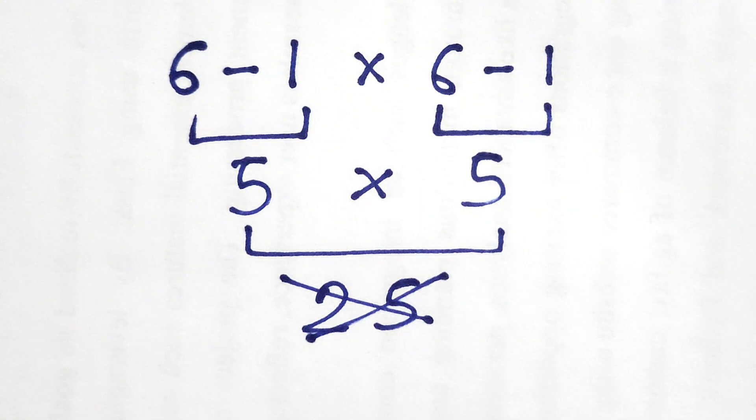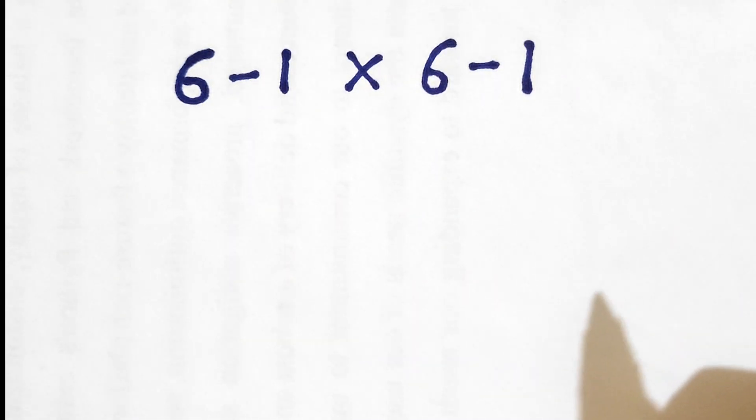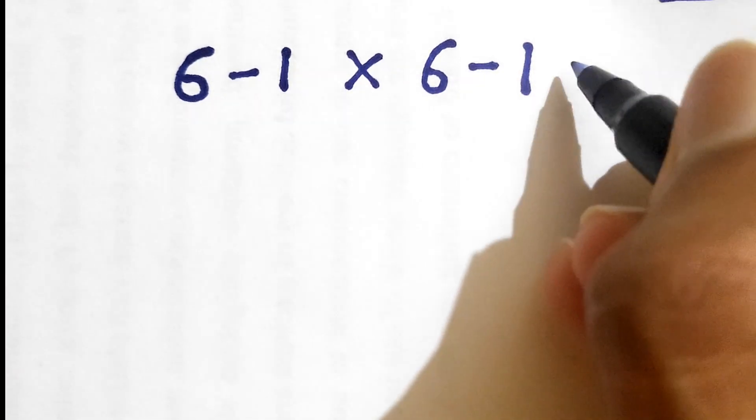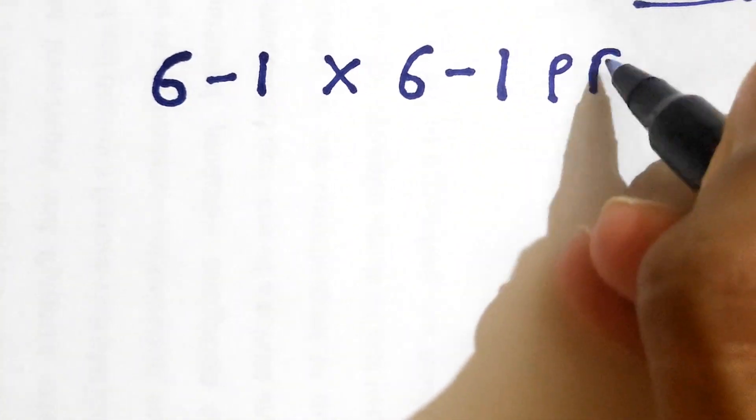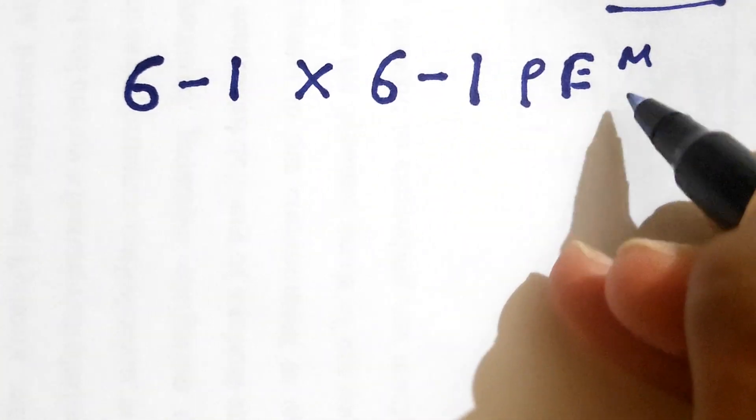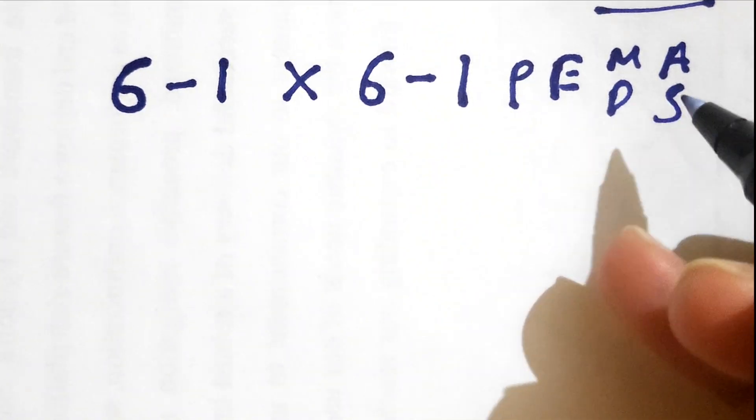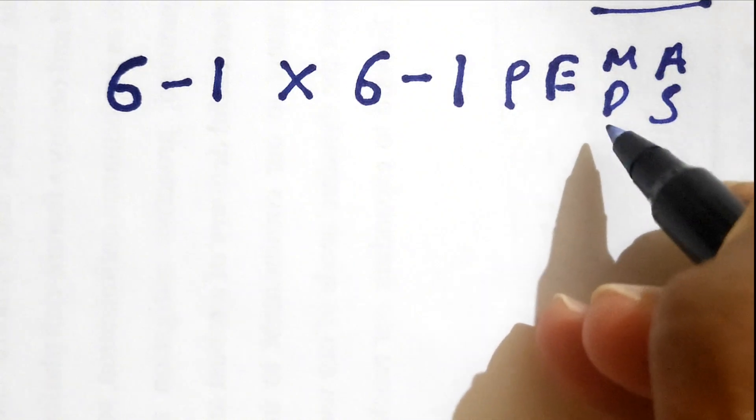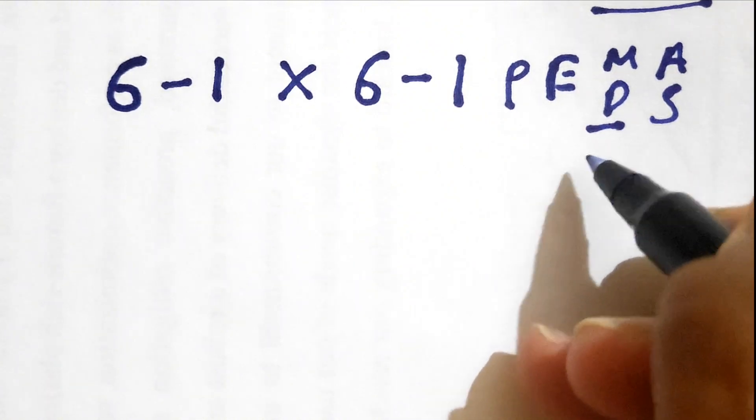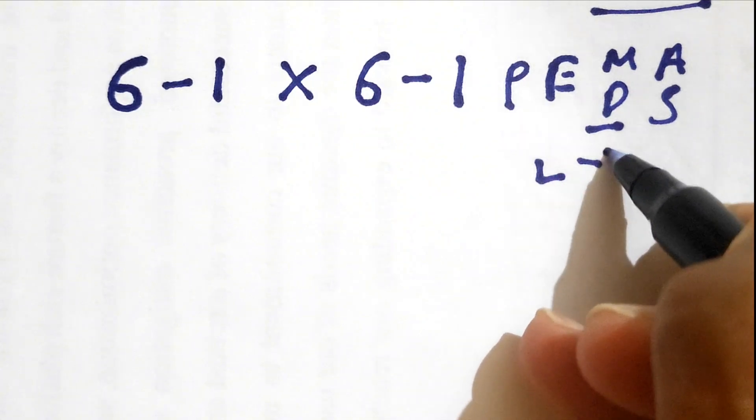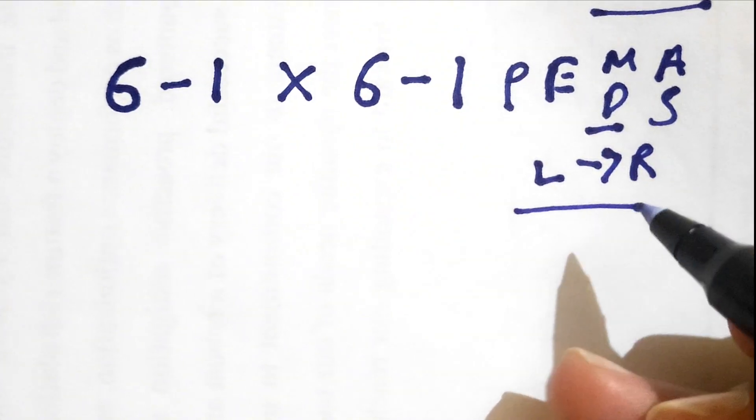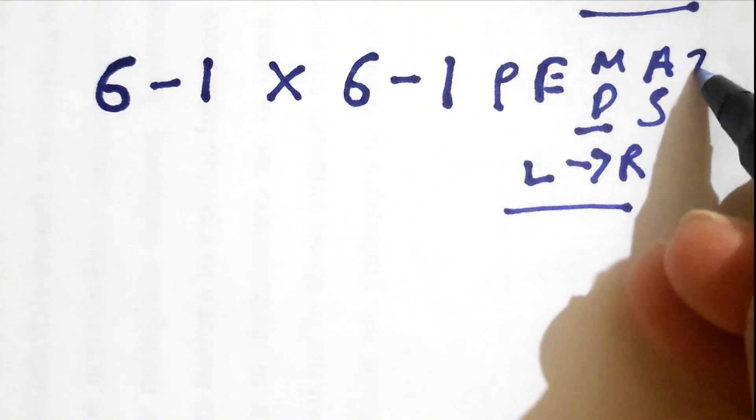Let's see how we can solve this in a proper manner. According to the order of operations, first we need to solve the parenthesis, then exponents, then multiplication or division, and then addition or subtraction, in which the priority of multiplication and division is the same, but we need to go from left side towards the right side, whichever comes first we need to solve it. Same applies for addition and subtraction.